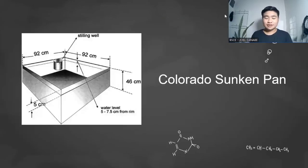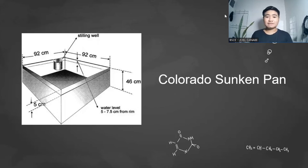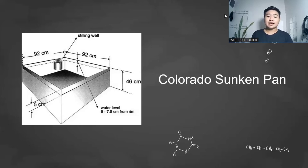Next is the Colorado sunken pan. It is a 920 millimeter square pan made of unpainted GI sheets, 460 millimeters deep, and is buried into the ground within 100 millimeters of the top. The main advantage is that its aerodynamic and radiation characteristics are similar to that of a lake. Disadvantages include difficulty in detecting leaks, high installation cost, and extra care needed to keep the surrounding area free from tall grass, dust, and so on.